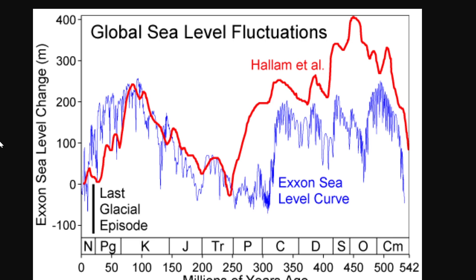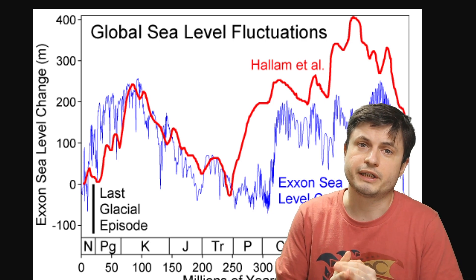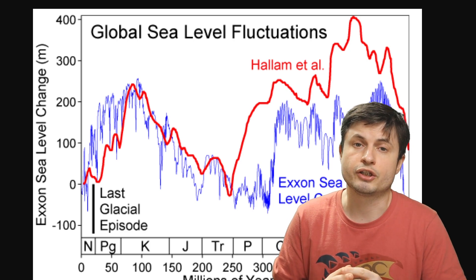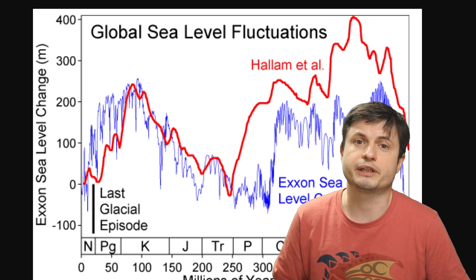But first of all it's important to understand that the water levels always change with time, mostly due to climatic conditions and various weather effects that occur on the planet. Here's for example how the levels changed in the last 500 million years or so, with levels being really high about 100 million years ago and possibly even being higher about 400 to 450 million years ago.